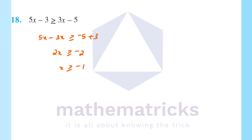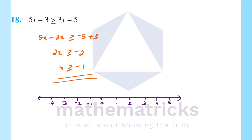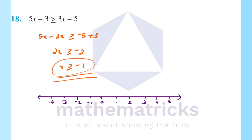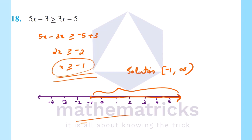The solution is x greater than or equal to minus 1. On the number line, since x is equal to minus 1 is included, we use a closed interval. The solution is the closed interval minus 1 to infinity. The point minus 1 is marked as closed (filled) on the number line, shading to the right.